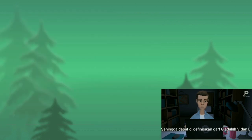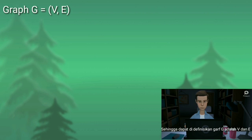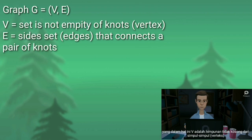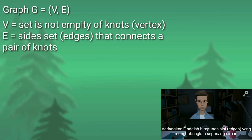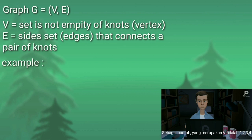So, it can be defined. Graph G is (V, E), where V is the set, not empty, of knots or vertex. And E is the side set or edges that connects a pair of knots.